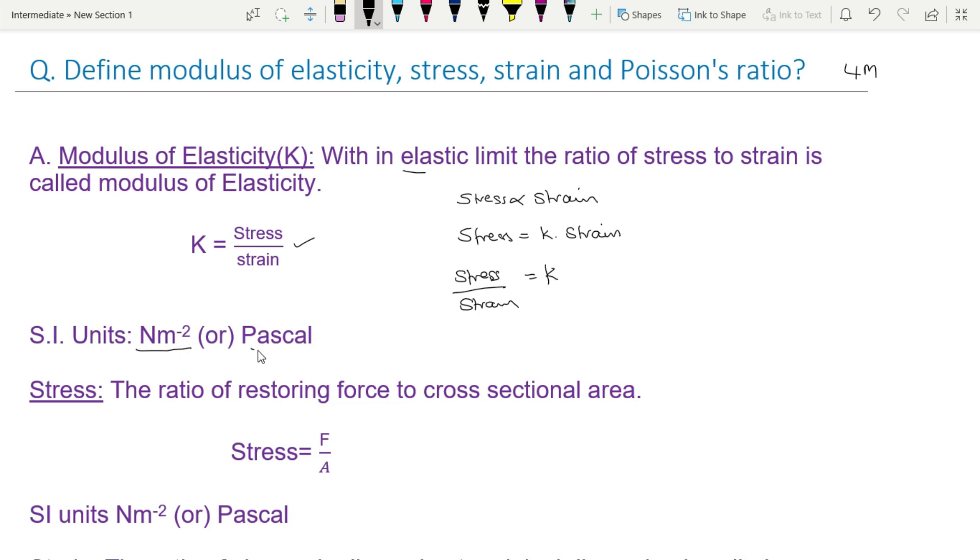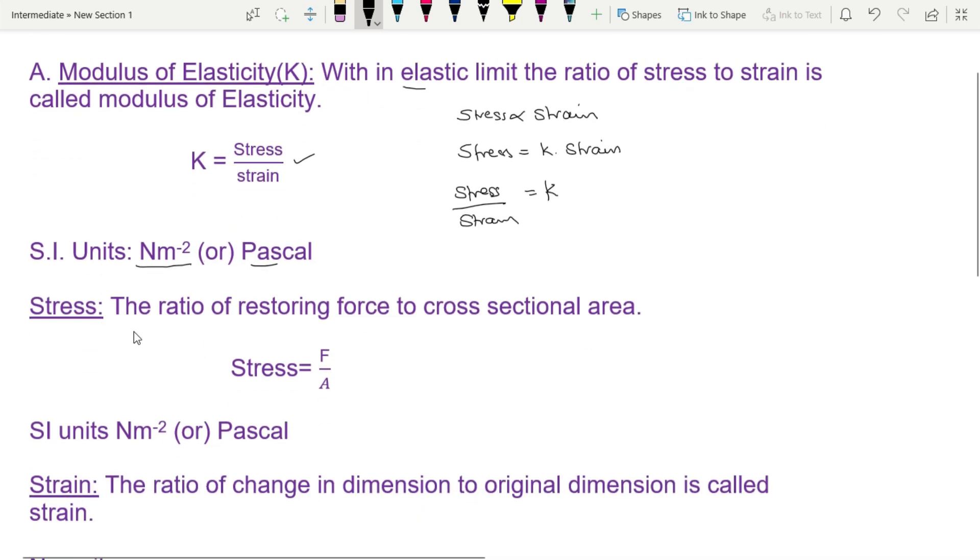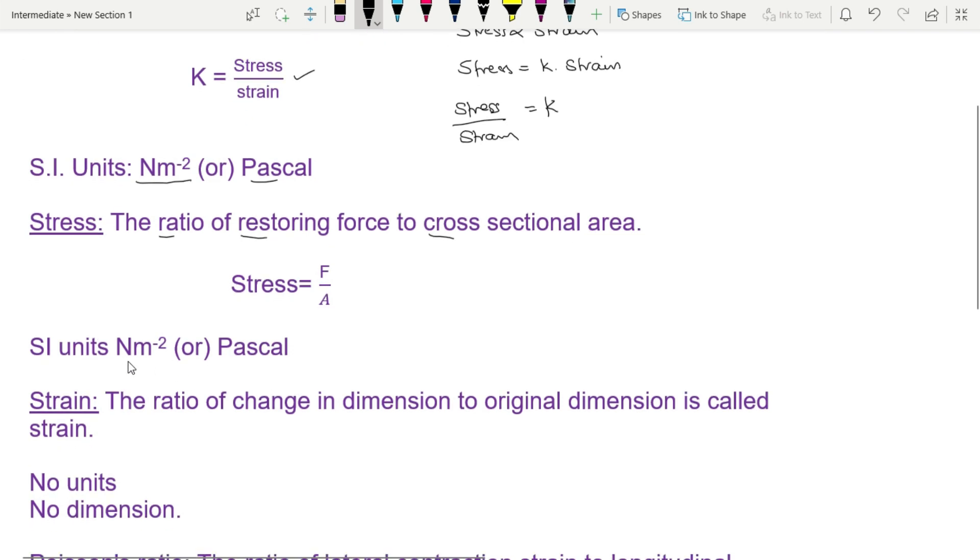K is equal to F by A. The ratio of restoring force to cross-sectional area is called stress. So stress is equal to F by A. Restoring force F by cross-sectional area A. Force by area is stress. Units: Newton meter power minus 2 or Newton per meter square, same units or Pascal.